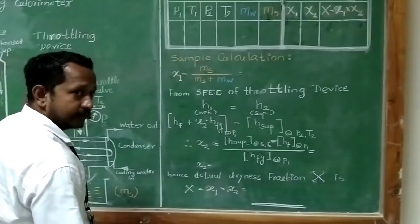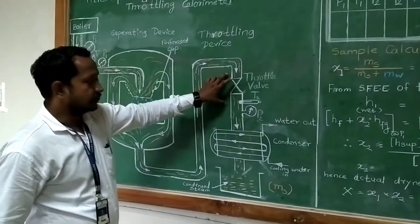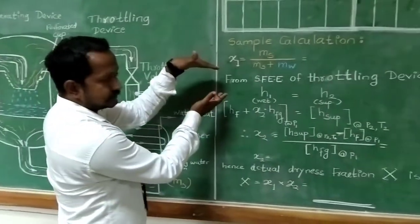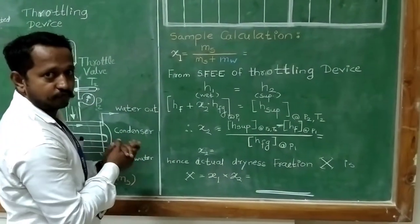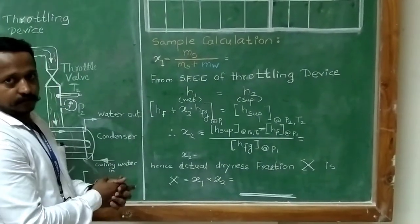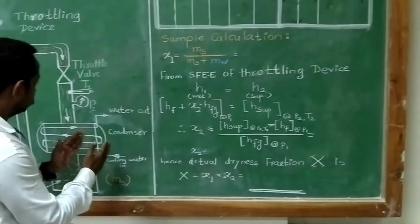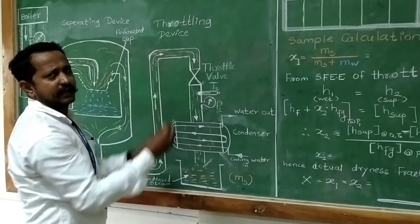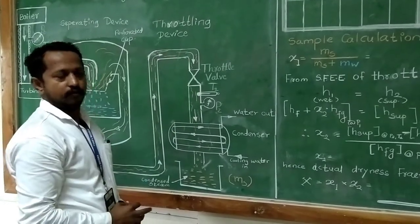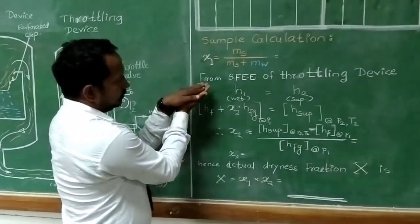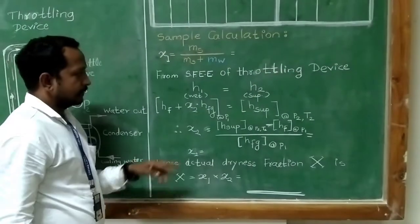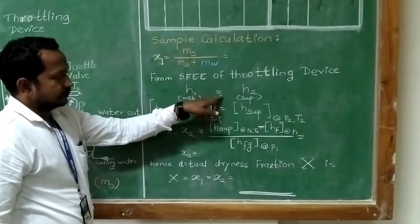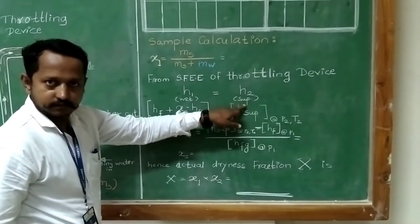Now, there is another device, which is nothing but the throttling device. This throttling device has another calculation to find another dryness fraction of the steam. But in this case, the steam is dry enough — it has very little amount of water particles. Now, we are using the steady flow energy equation of the throttling device. It shows: enthalpy before throttling, h1, is equal to enthalpy after throttling, h2.